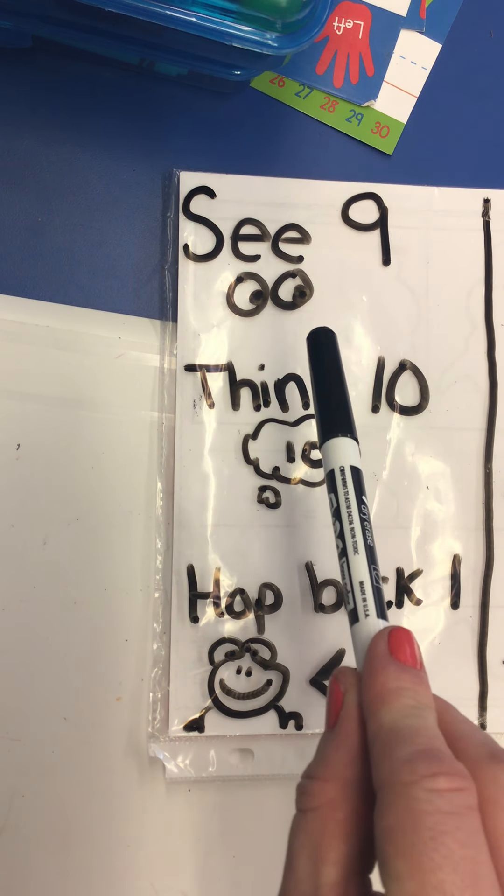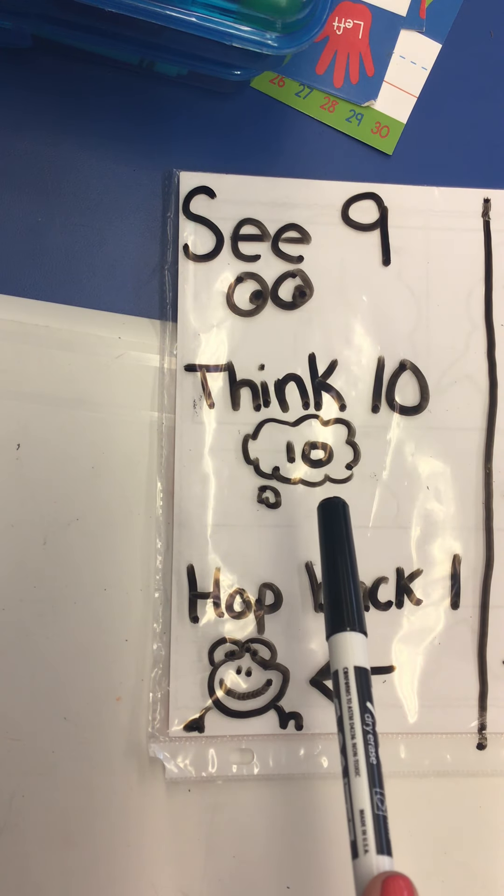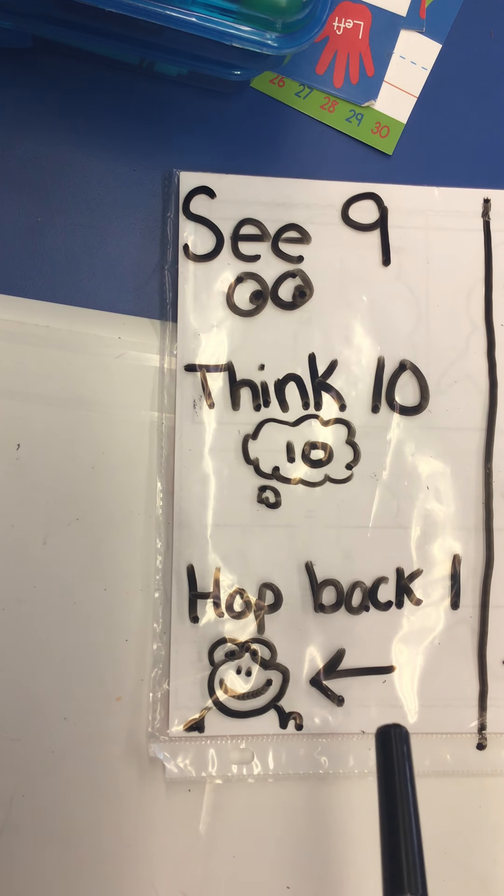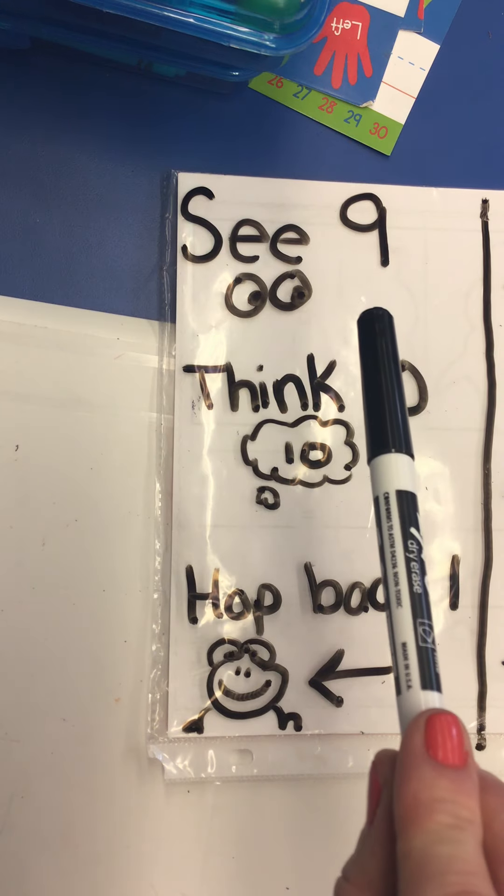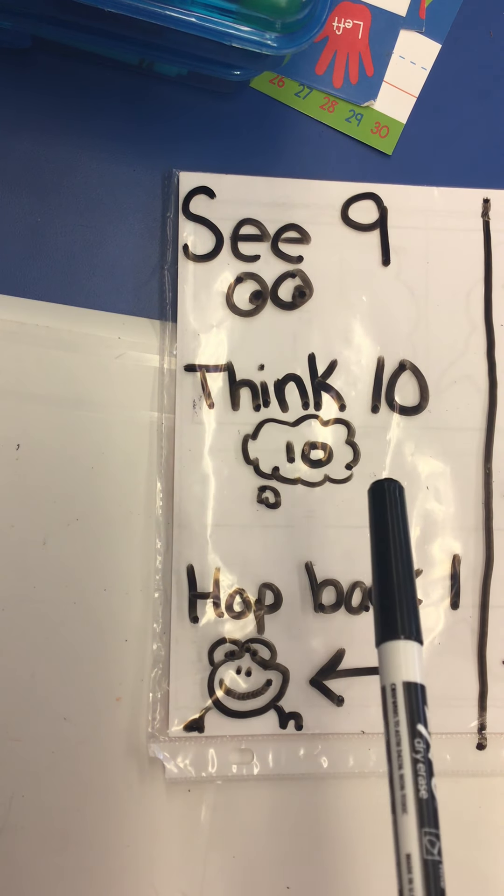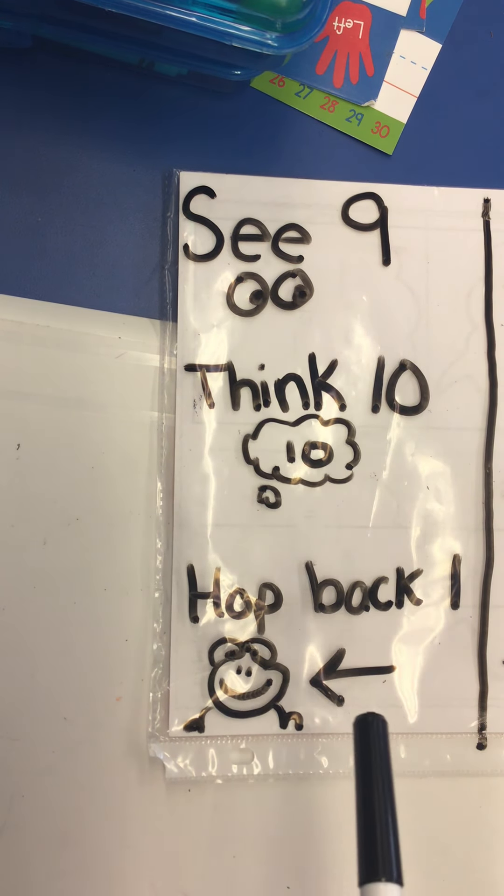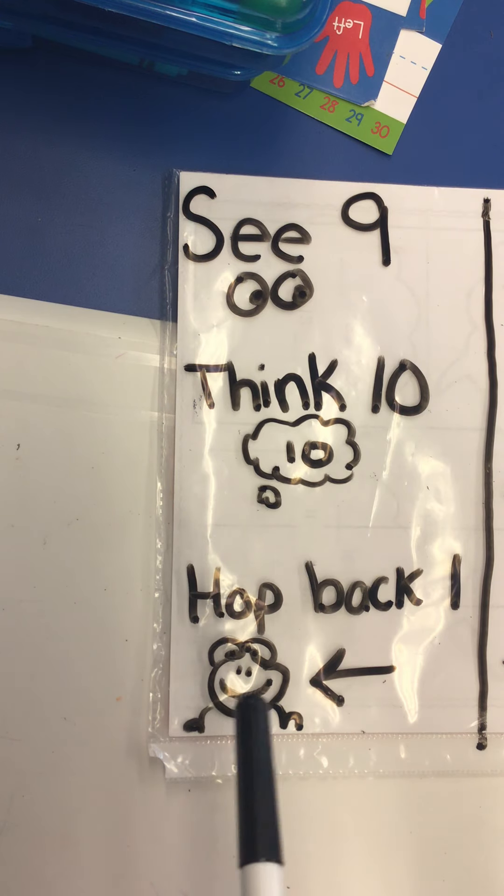See nine, think 10, hop back one. Ready? See nine, think 10, hop back one. Okay, and this is my little froggy here.